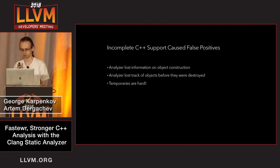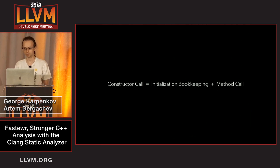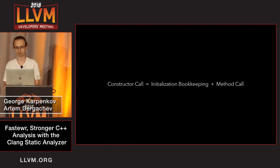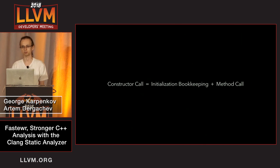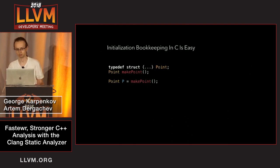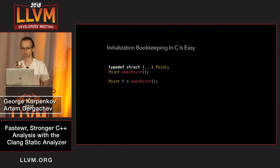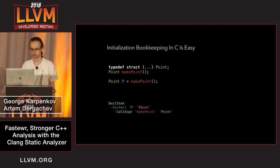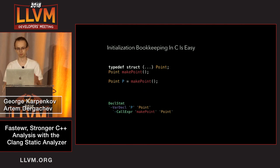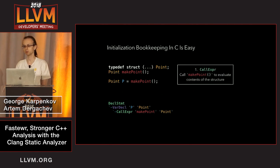A constructor call is kind of like a method call, but not quite. We already knew how to evaluate method calls, but when calling a constructor, a certain amount of invisible bookkeeping needs to be done — that's the hard part. In C, even when initializing a structure with a complex function call, the Clang syntax tree is very simple: declare a variable and initialize it with the result of the function call. The static analyzer would evaluate the function, obtain the return value, and put those contents into the variable.